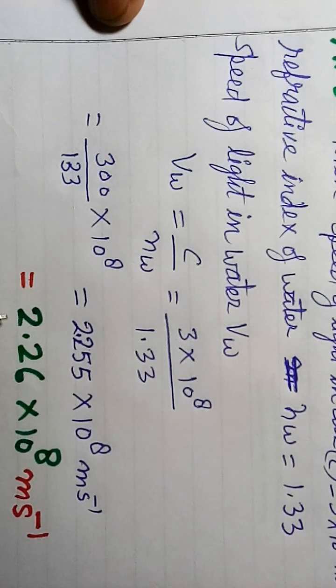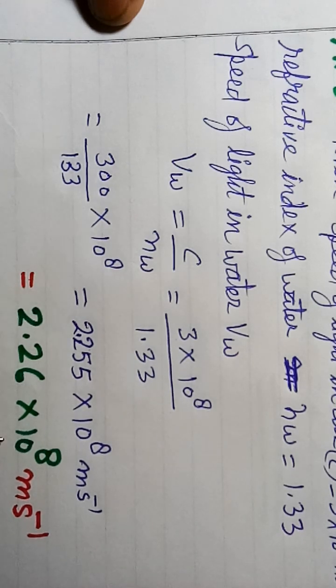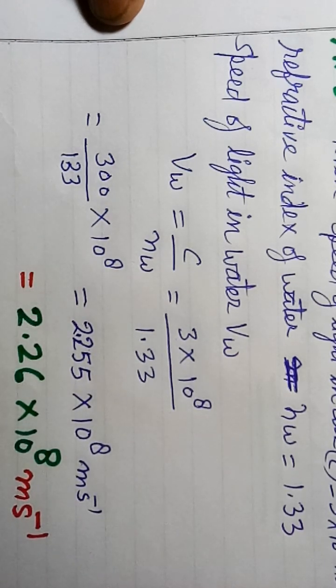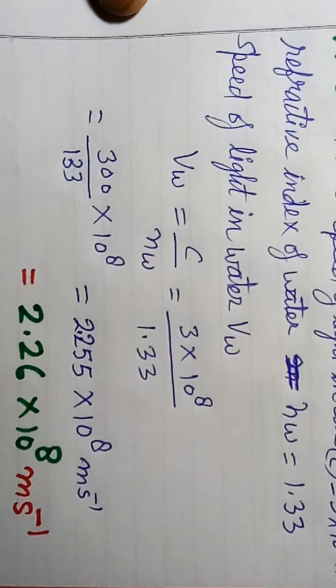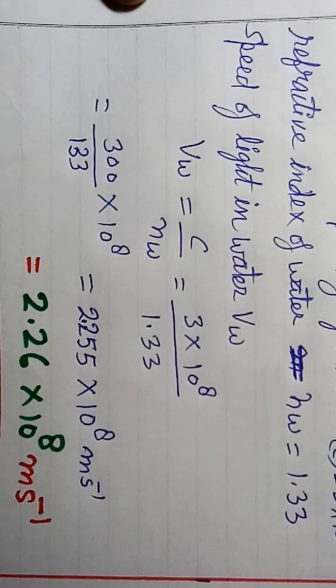The speed of light in water is approximately 2.26 × 10⁸ meter per second.